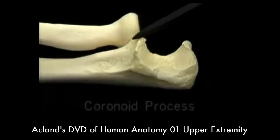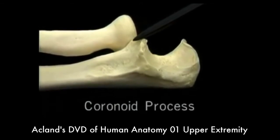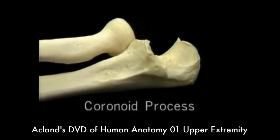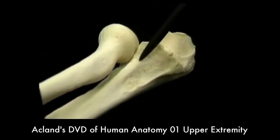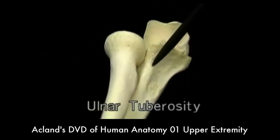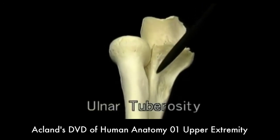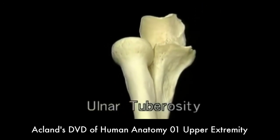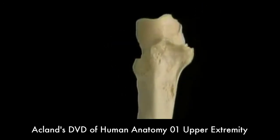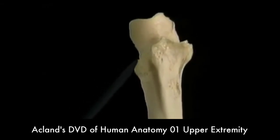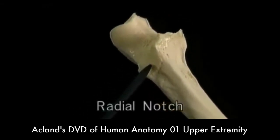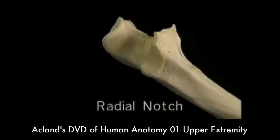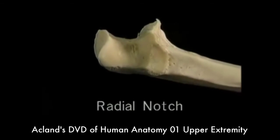This projection is the coronoid process. Distal to it, this rough area — the ulnar tuberosity — marks the insertion of the brachialis tendon. This small curved surface, the radial notch, is where the head of the radius articulates.